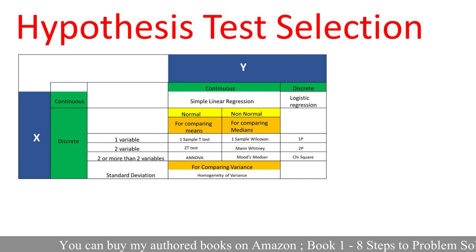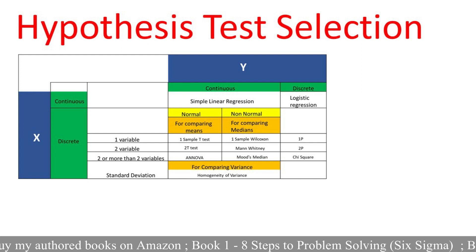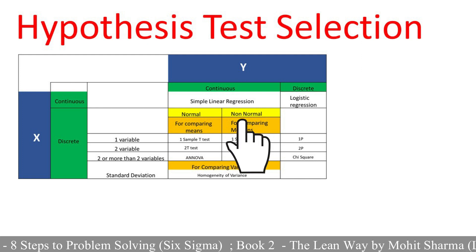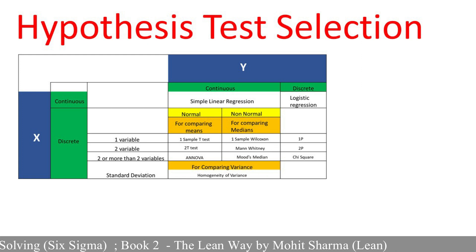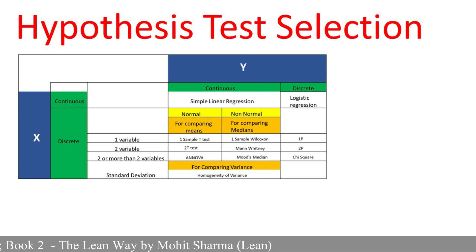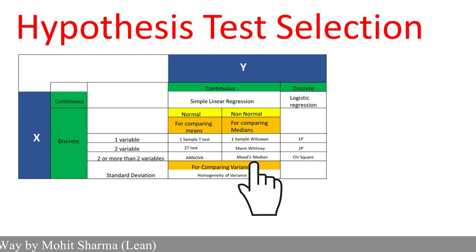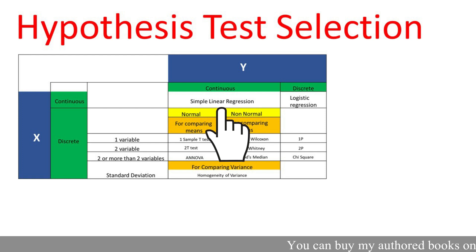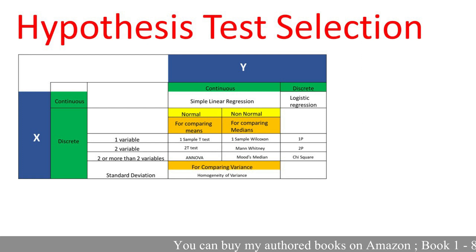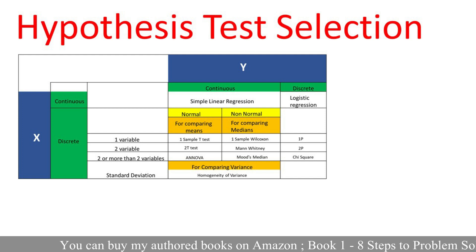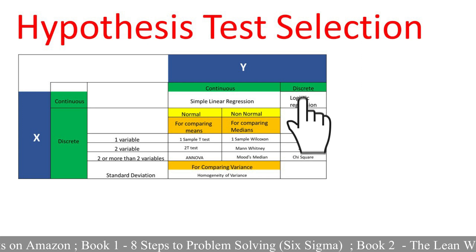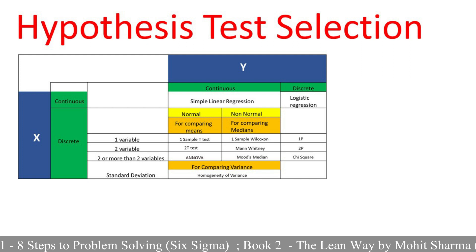In the next example, Y was continuous and non-normal with a discrete X having two or more variables, so we used Mood's Median test. When the second X was continuous, we again used simple linear regression, since normality of Y does not affect this test. In the last example, when Y was discrete and X was also discrete, we used the chi-square test, where a p-value less than 0.05 indicates a significant X.